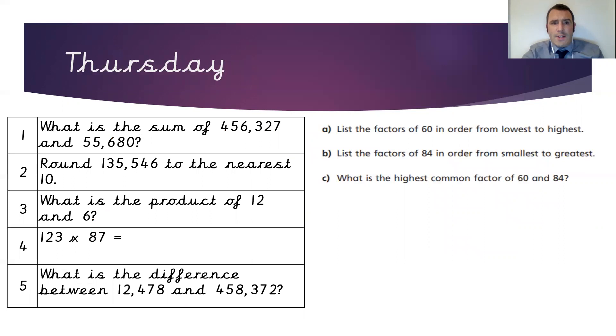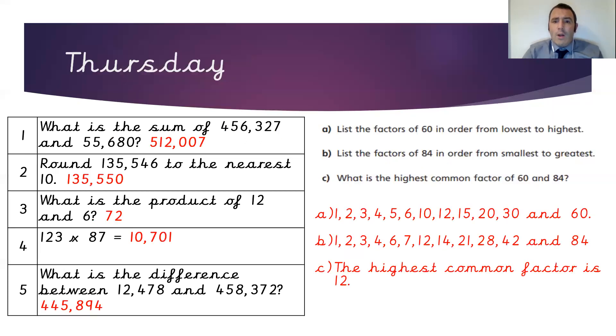Here are your questions for Thursday, Year 5. Pause the video here to do your work, and when you're ready, press play to carry on. We've been looking at finding factors this week. The factors are the numbers that get multiplied together to make the number we're looking for. So the factors for 60 are 1, 2, 3, 4, 5, 6, 10, 12, 15, 20, 30, and of course, 60.